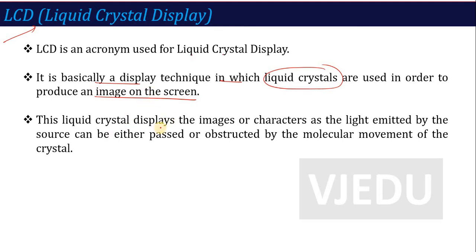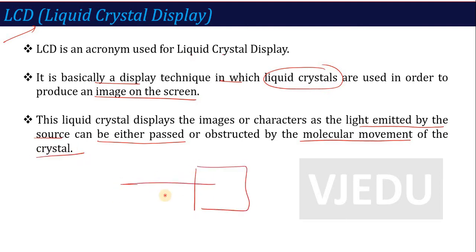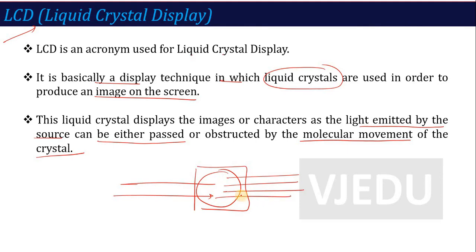These liquid crystals display the images or characters as the light emitted by the source can be either passed or obstructed by the molecular movements of the crystal. There will be light emission on the crystal, and the molecules in this crystal change their polarization and activity according to the screen. This is the main principle of LCD — when light is emitted on the liquid crystal, it will display the image on the screen.